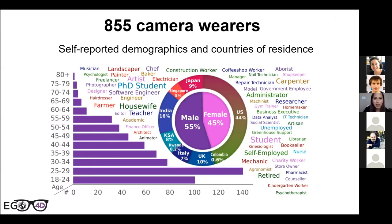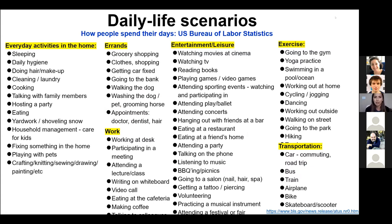The 855 camera wearers come from all walks of life. The composition shows ages from 18 to more than 80 years old, nine different countries including five US states, an approximately even mix of male and female participants, and a wide range of occupations visible in a word cloud surrounding the charts.